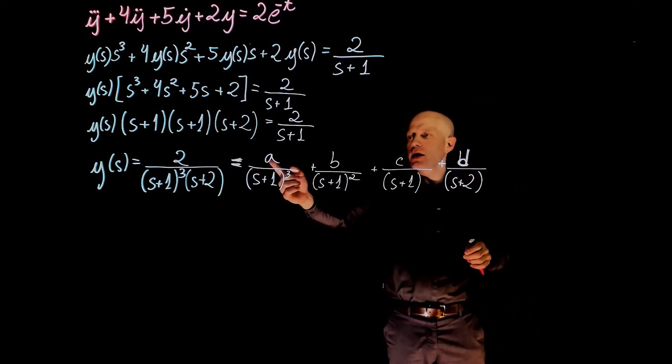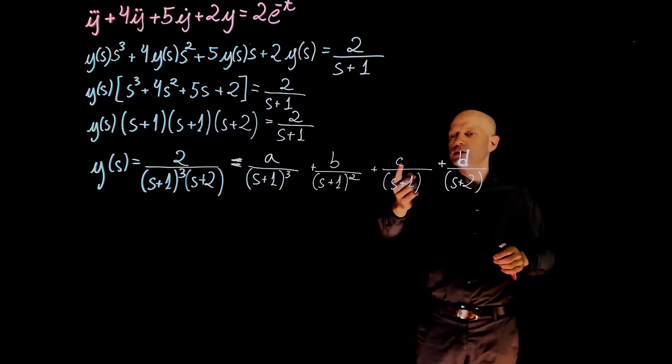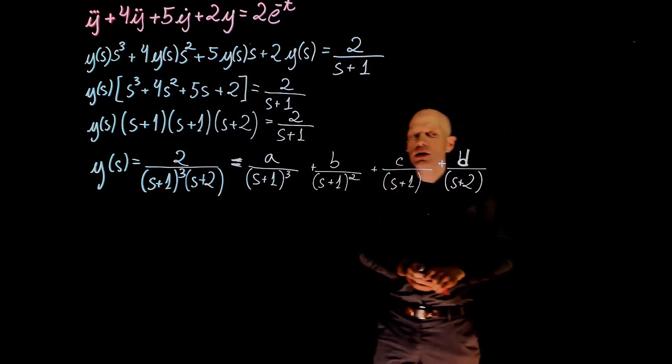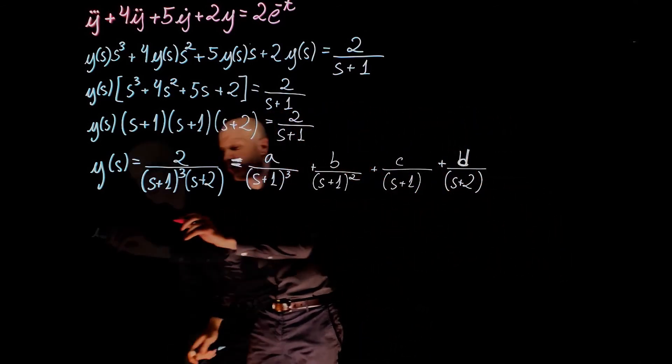For this particular example, a is 2, b is negative 2, c is positive 2, and d is negative 2. So y(s).